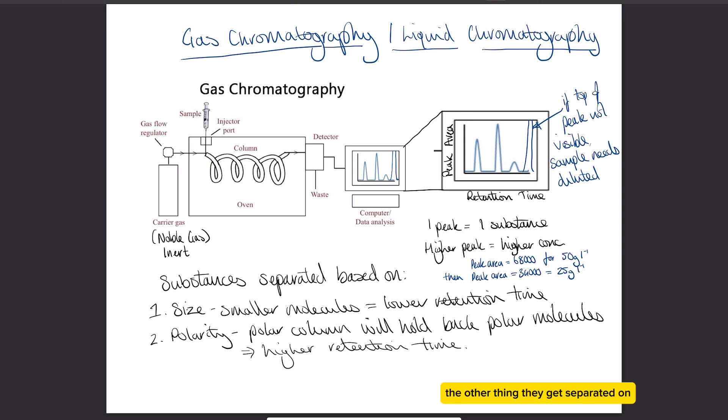The other thing they get separated on again is the polarity. Like I said, that coating in the column, the stationary phase, if the coating is polar, the polar molecules in your mixture are going to take longer to travel through because they're going to be held back by the polar coating on the column because they will be interacting with each other. So in that case, if you've got a polar column, the polar molecules are going to take longer to travel through, so their retention time will be higher.